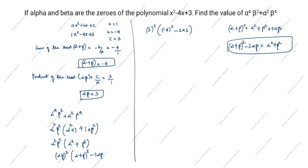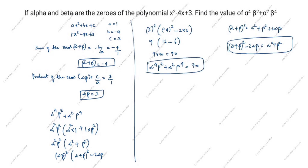9 into 10 is 90. So the value of alpha power 4 beta square plus alpha square beta power 4 is 90. Thanks for watching this video.